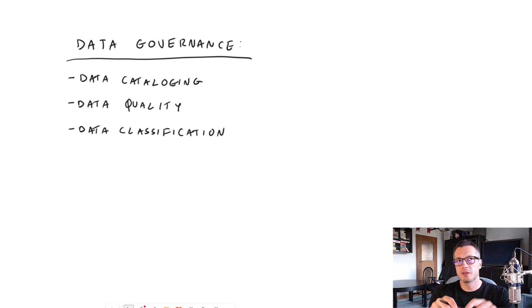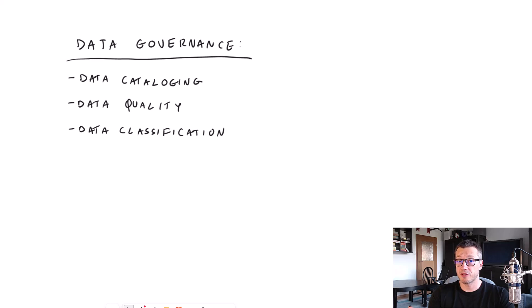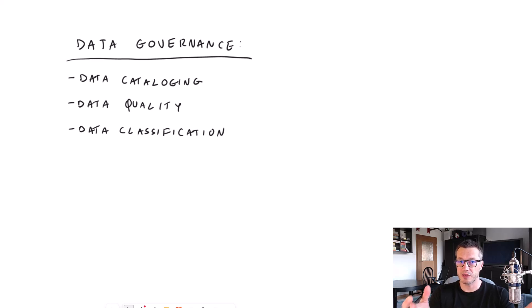Then we have data classification. Basically, data classification is about applying various labels and tags to your data to indicate, for example, how sensitive it is. Do you store some top-secret data, some personally identifiable information — PII data like first name, last name? Which data has a higher security classification and should be protected with more care, versus just generally available public data? Data classification is about classifying your datasets into those various categories.